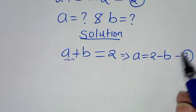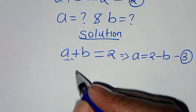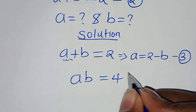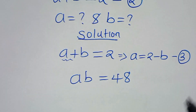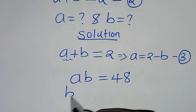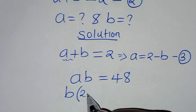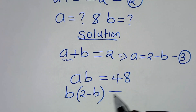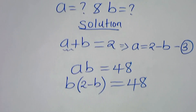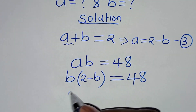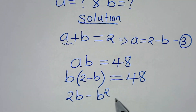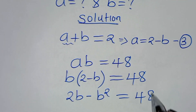Let's substitute equation 3 into equation 1. Equation 1 is a times b equals 48. Substituting a, we have b times (2 minus b) equals 48. Expanding: b times 2 is 2b, minus b times b is b squared, so 2b minus b squared equals 48.